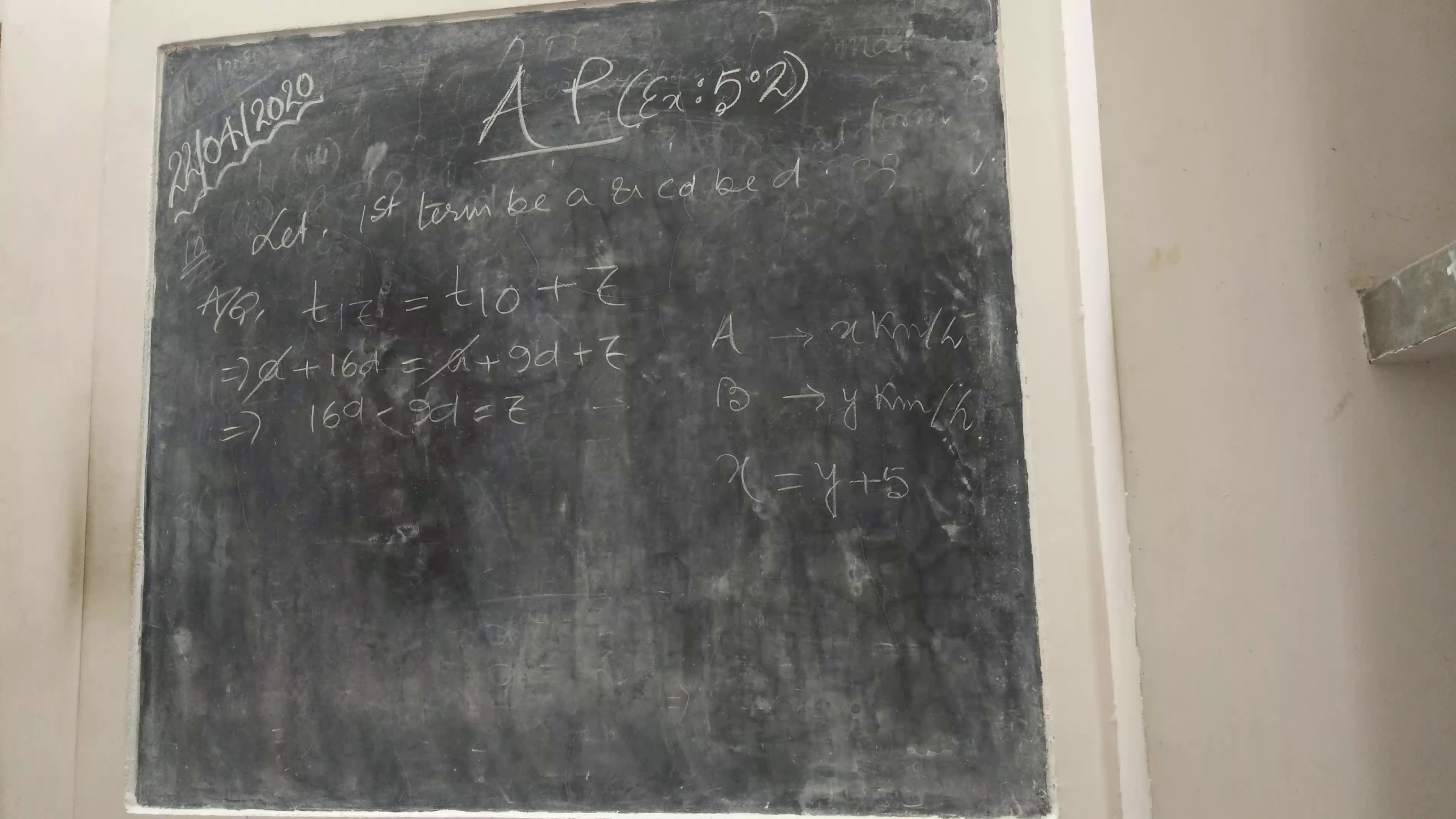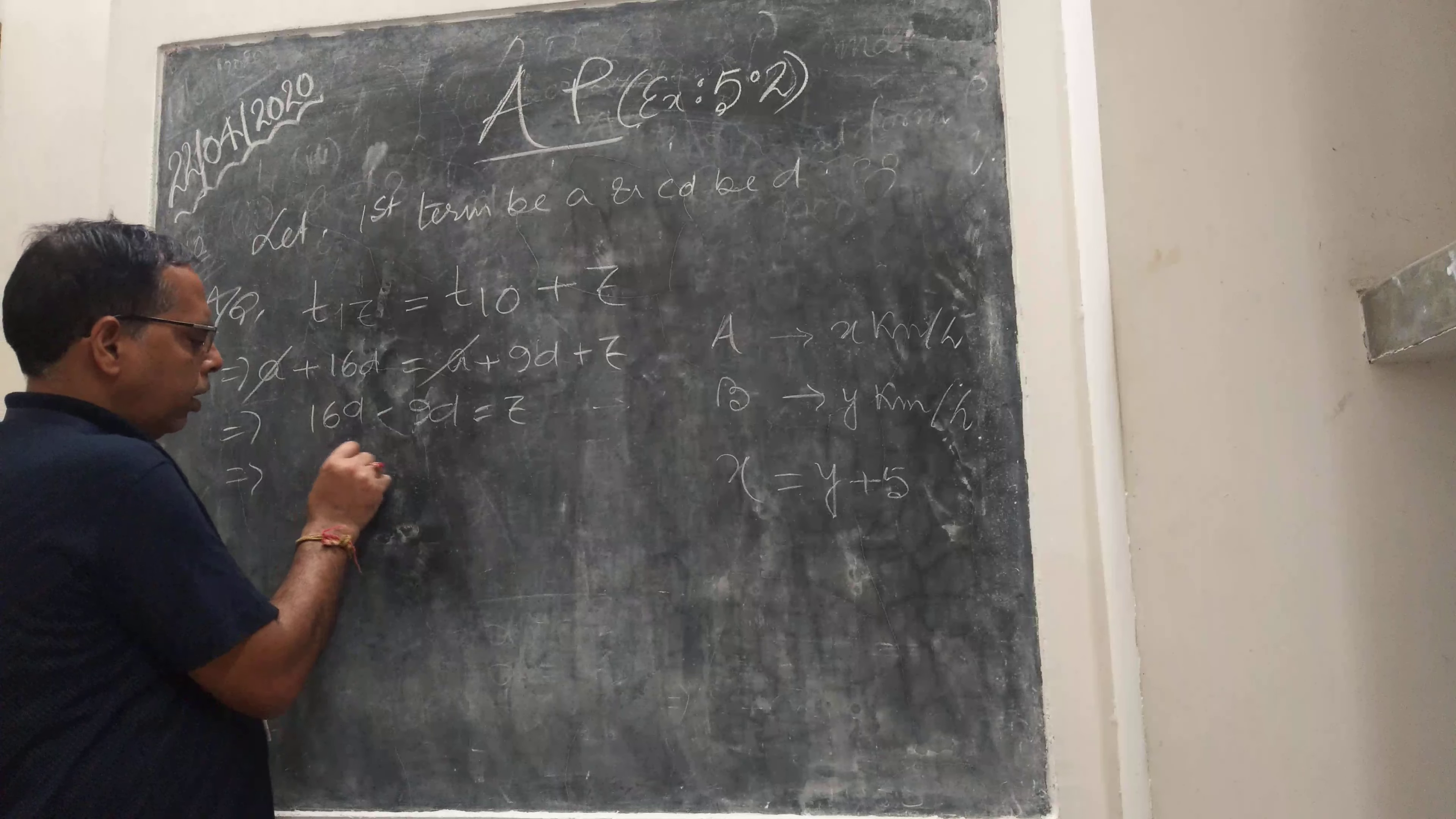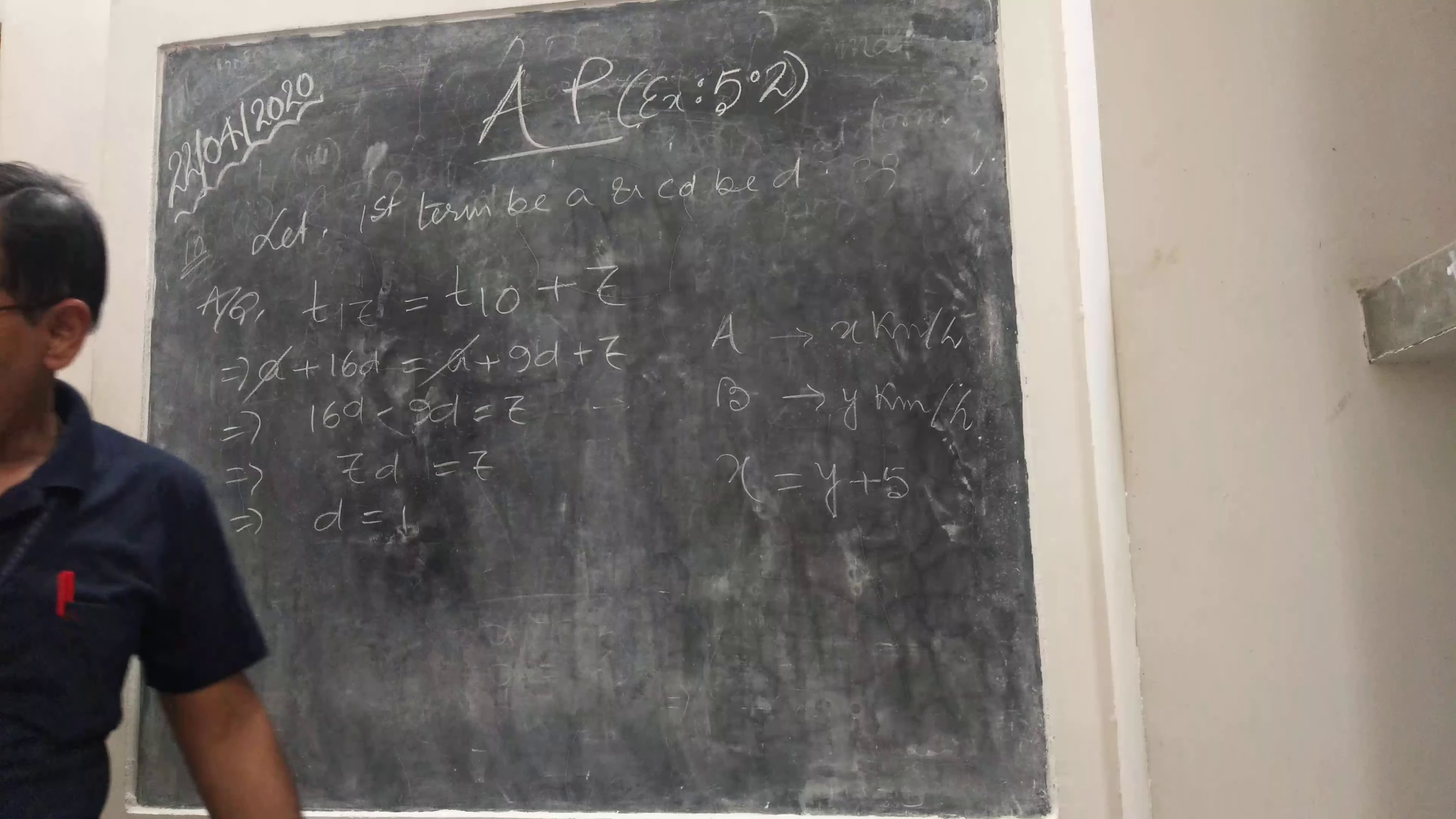Remember this is the continuation of the last video due to some problem. So 7D equals 7 implies D equals 1. Now the common difference is 1.